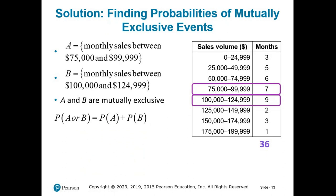The probability of A or B equals the probability of A plus the probability of B. Three years converts to 36 total months. The first range had 7 months, so that's 7/36. The second had 9 months, so 9/36. Adding those together gives 16/36, which is approximately 0.444.